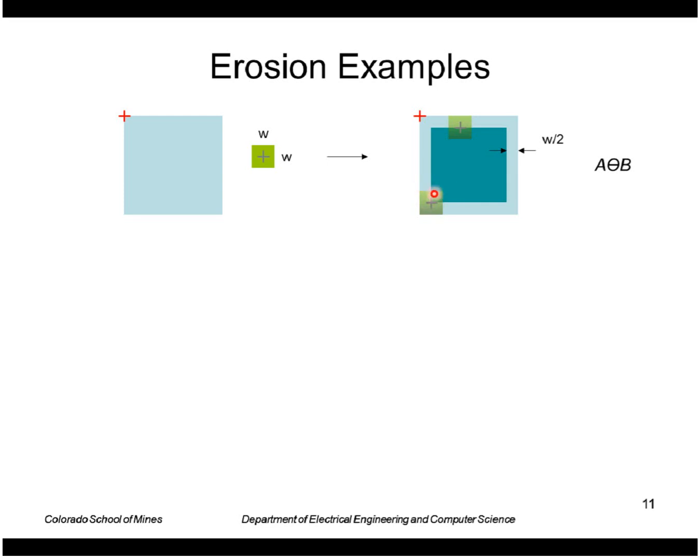This location of this square is completely inside the original set A, so I can output a one there. But if I go any further outside away from the center, I have to output a zero. I can also use a disk structuring element of radius r, which turns out I get the same result for the erosion of A by B, namely it's smaller by in this case the radius r.